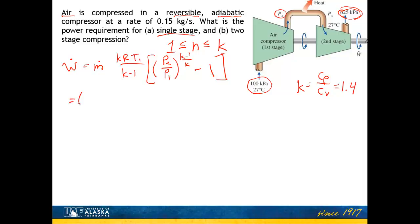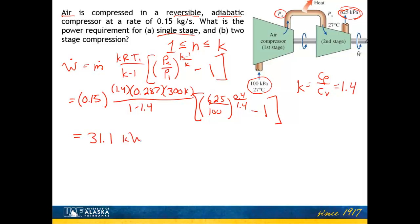So let's go ahead and do that. Our mass flow rate of 0.15, and now I'll go ahead and put in this ratio 1.4. My value of r for air is 0.287, and my initial temperature in Kelvin is 300 Kelvin. And that will be over 1 minus 1.4. And now we've got our ratios of pressures. So 625 is the final, 100 is the initial. So k minus 1 is 0.4 over 1.4, and I subtract 1 from that. And I'm going to go ahead and do all of that arithmetic. And this comes out to about 31.1 kilowatts. So there's the power requirement if this was done in a single stage.